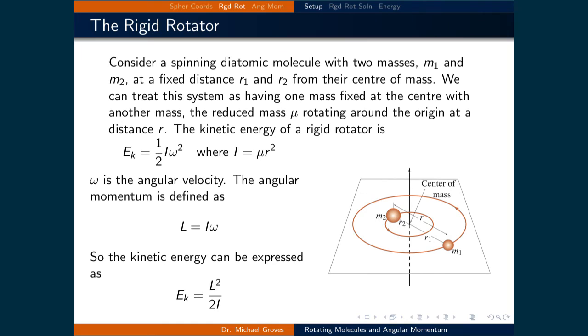Let's now look at what a rigid rotator looks like. Consider a spinning diatomic molecule with two masses, m₁ and m₂, at a fixed distance, r₁ and r₂, from their center of mass. We can treat this system as having one mass fixed at the center with the other mass, with the reduced mass μ, rotating around the origin at a distance r. The kinetic energy of a rigid rotator is ½Iω².